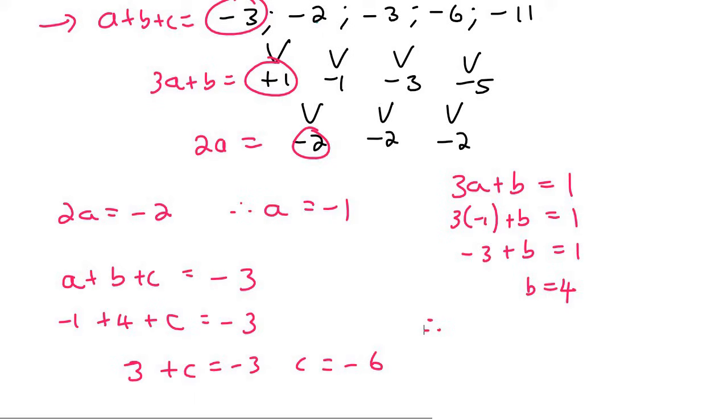oh, and remember that the general formula of a quadratic is TN equals to AN squared plus BN plus C. So TN would then be equal to A, which we said was minus one, B was four, and C was minus six.